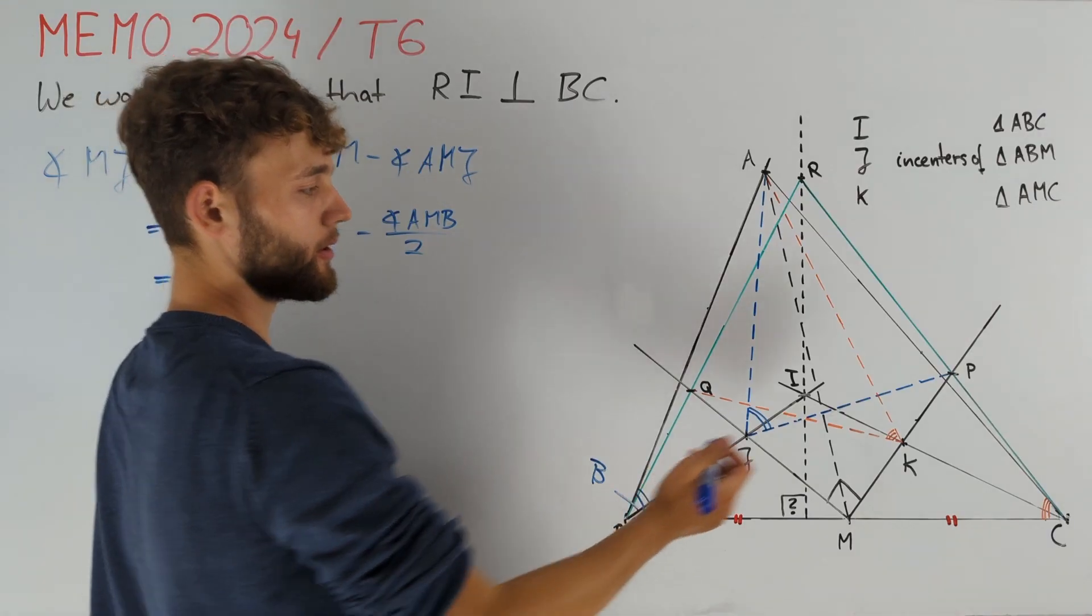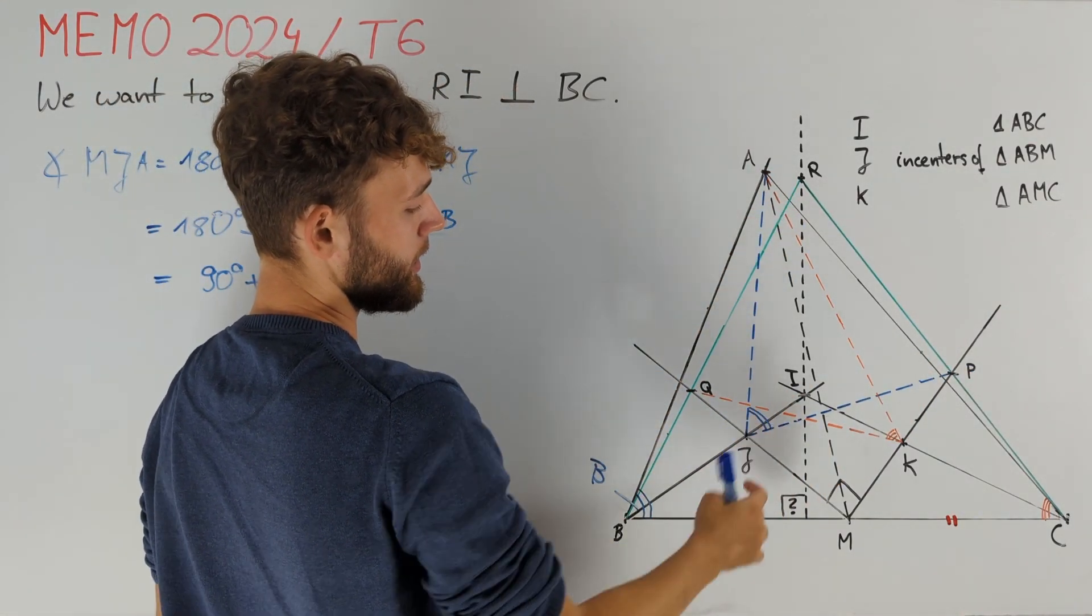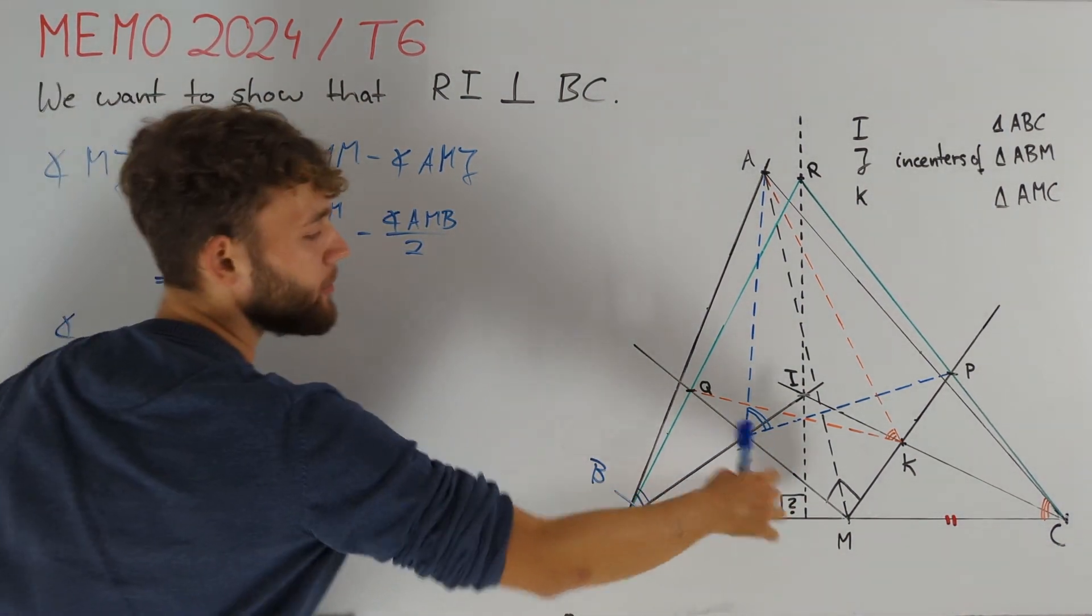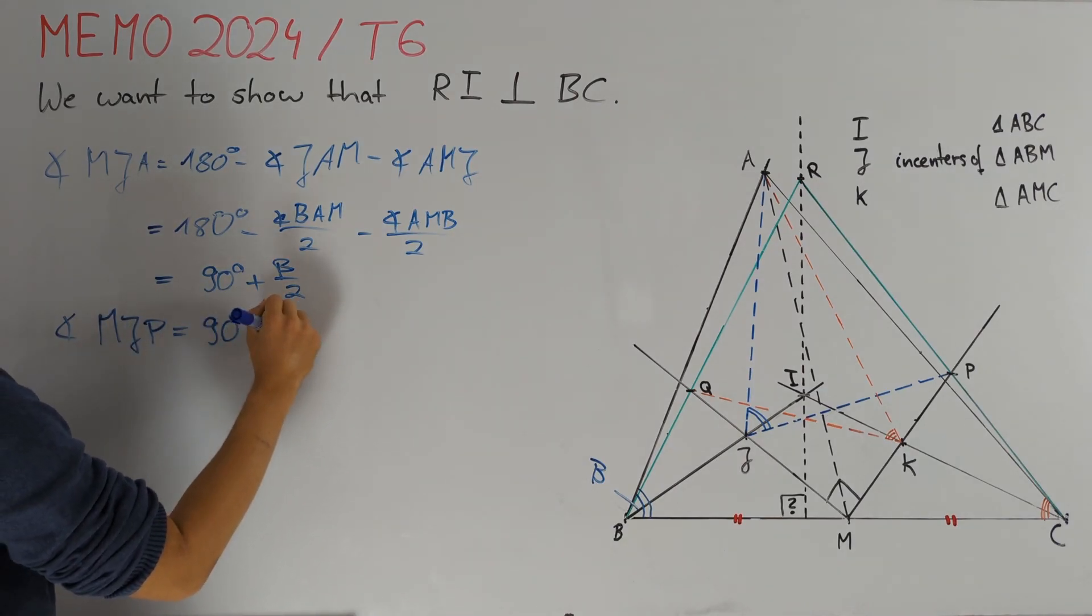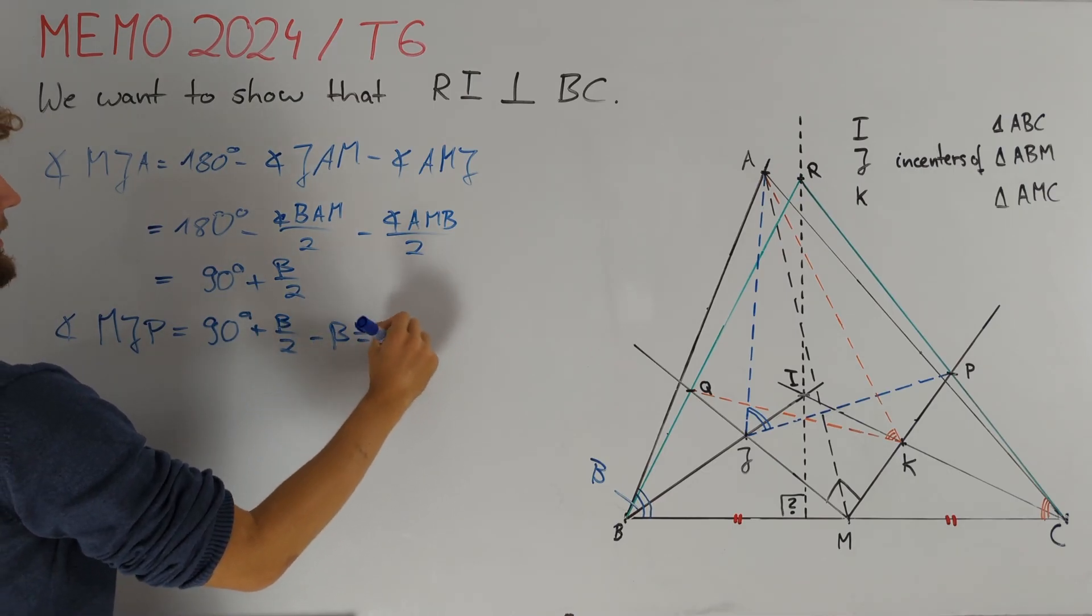Now we can use the condition that angle PJA is equal to beta. By subtracting these two equalities we can get angle MJP which is therefore nothing but 90 degrees plus beta over 2 minus beta or 90 degrees minus beta over 2.